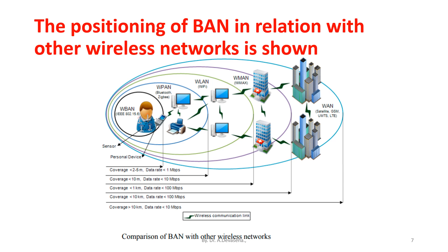Next we have wireless local area network, WLAN. Example: Wi-Fi. The coverage area for WLAN is less than 1 kilometer. The data rate speed is less than 100 mbps. Next we have wireless metropolitan area network. Example: Wi-Fi variants. The coverage area is less than 10 kilometers. The data rate speed is less than 100 mbps. Next we have wide area network. Example: Satellite, GSM, UMTS, LTE. The coverage area for wide area network is greater than 10 kilometers. The data rate is less than 10 mbps.